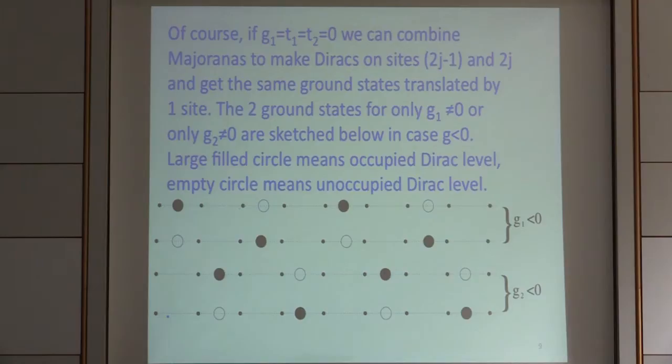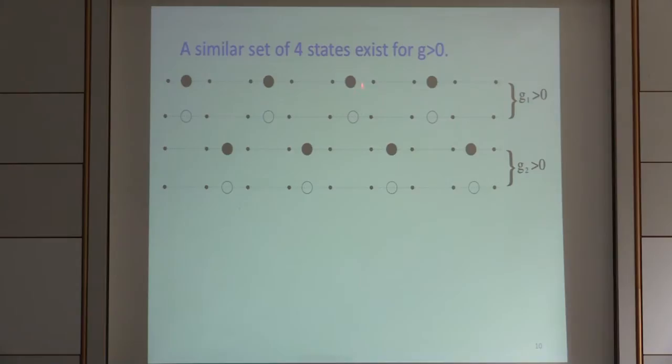If G1 equals G2, we might expect four ground states because translation by one site shifts how we're combining Majoranas to make Diracs, and we still have another two-fold degeneracy once we have Diracs. For G greater than zero, we again have four states: two ways of combining Majoranas to make Diracs and the ferromagnetic situation of either all states empty or all states occupied, giving two ways of defining Diracs by combining pairs of Majoranas.